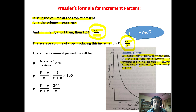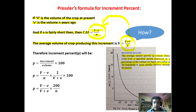We don't just write on the single V; we have to take the average of both volumes, which is V plus v upon 2. Now we have X (increment) and Y (volume), and the percentage is simply X upon Y into 100. So P is equal to increment upon volume into 100.